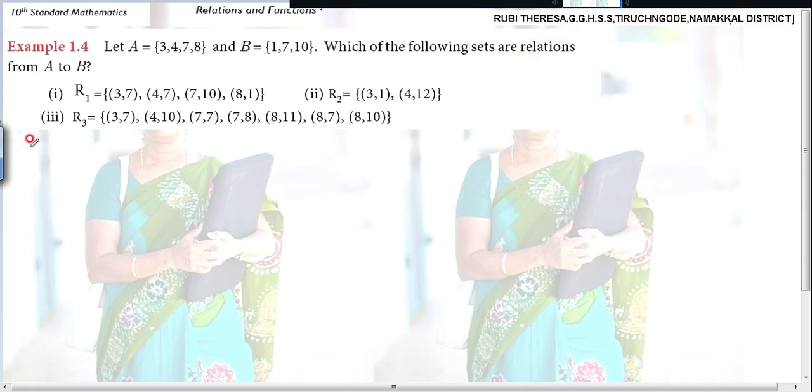So first better you can find out A cross B. Because now only you are studying about relations and Cartesian product in 10 standard. So it is better to find out A cross B. A cross B is nothing but the set of all possible ordered pairs.